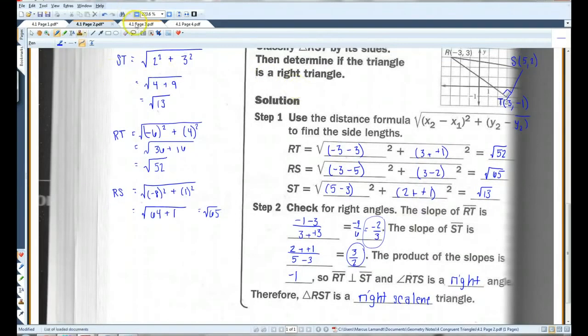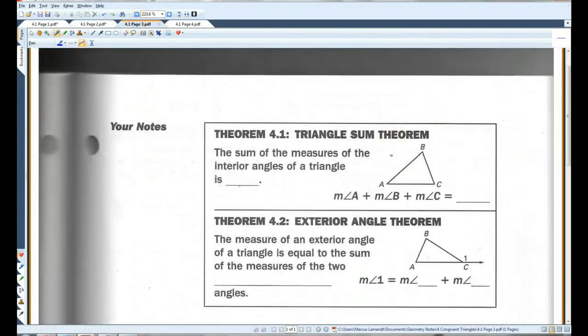All right, let's go on to page 3. Okay. Theorem 4.1, triangle sum theorem. This is actually a really important theorem. We're going to be using this a lot. The sum of the measures of the interior angles of a triangle is 180 degrees. Memorize this one. This will be coming up a lot. So, in this case, any triangle, absolutely any triangle, all three of the angles, if you add them together, it will equal 180 degrees.